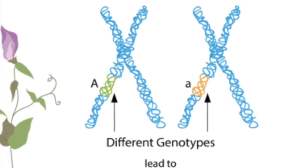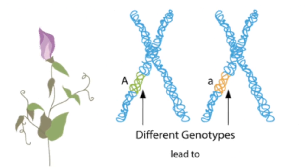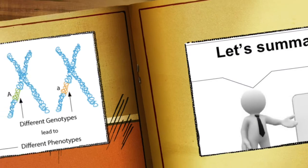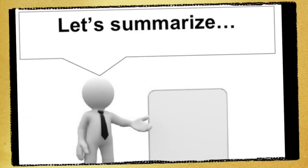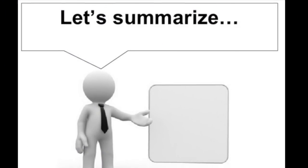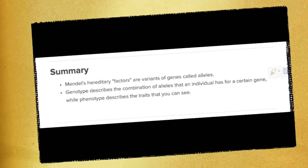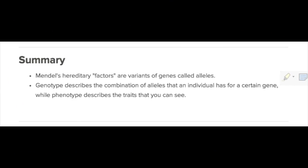Let's summarize what we've learned so far: Mendel's hereditary factors are variants of genes called alleles. Genotype describes the combination of alleles that an individual has for a certain gene, while phenotype describes the traits that you can see.